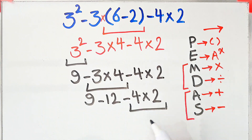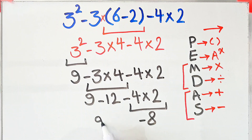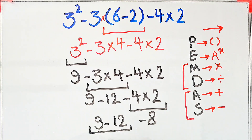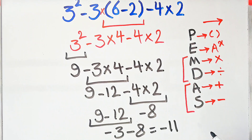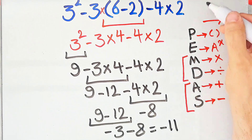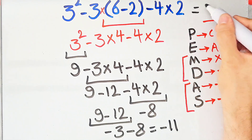Negative 4 times 2 equals negative 8. Now we have 9 minus 12, then minus 8. 9 minus 12 equals negative 3, and negative 3 minus 8 equals negative 11. The final answer of this question equals negative 11.